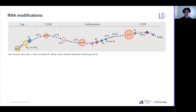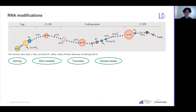As the name says, RNA modifications are changes to the chemical composition of ribonucleic acid, which can occur anywhere on the molecules and on any of the ACGT nucleotides. So far, over 100 modification types have been identified. Some are related to splicing, RNA instability, translation, or even diseases like cancer.